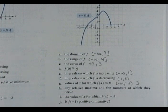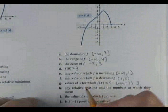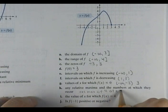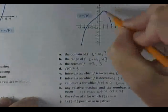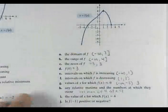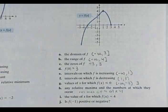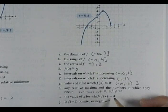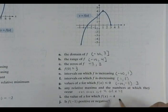Now what about any relative maximum and the numbers at which they occur? I have a relative max where? Of four at x equals what? One. Right there is my relative max. Right there, isn't it? So I have a relative max of four at x equals one. The value of x for which F of x equals four. Well, we just did that. What value of x is when y is going to be four?